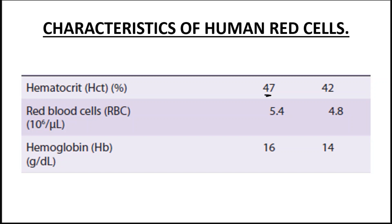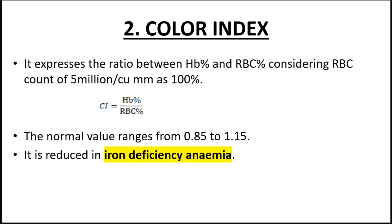The hematocrit in males is 40 to 47 percent, and in females it is about 42 percent. The red blood cell count in males is about 5.4 million and in females it's 4.8 million. Hemoglobin concentration in males is 16 grams per deciliter and in females it's 14 grams per deciliter. These are ranges — they've just picked one number from the range.